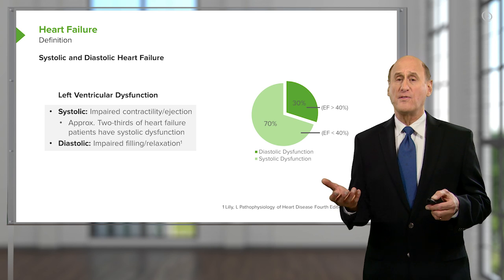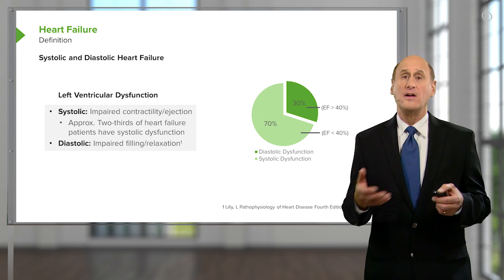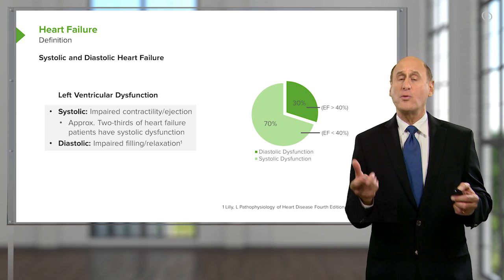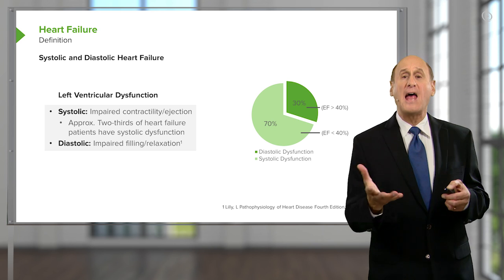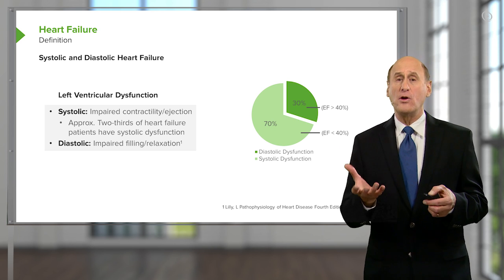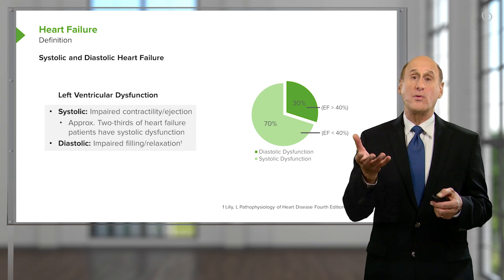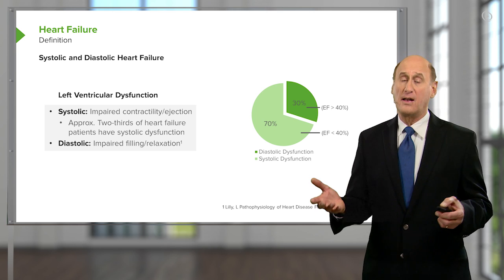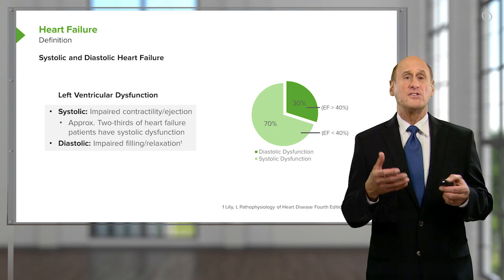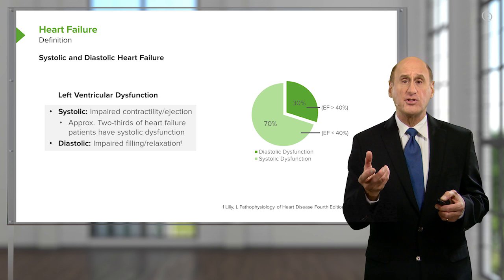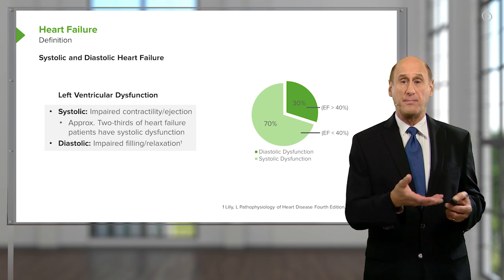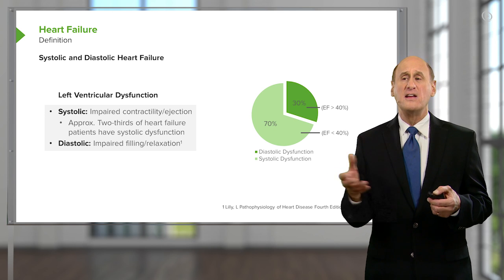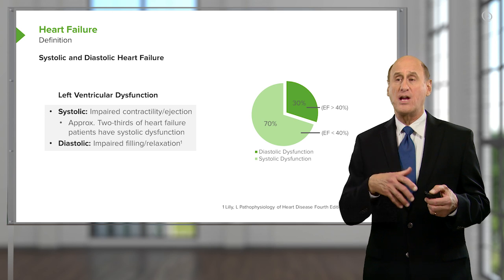There are two forms of heart failure: systolic and diastolic. Taking diastolic first — the ventricle squeezes all right, but it fails to relax normally. It relaxes slowly or in a stiffened manner, leading to increased pressure that gets transmitted throughout the circulation and leads to edema. Systolic heart failure is when the ventricle fails to squeeze well. That can happen with patients who've had heart attacks, or patients with cardiomyopathy — heart muscle disease. Often, systolic heart failure is associated also with diastolic.